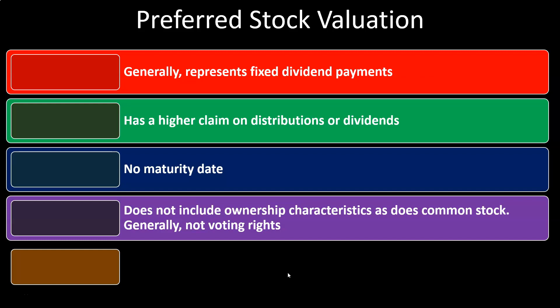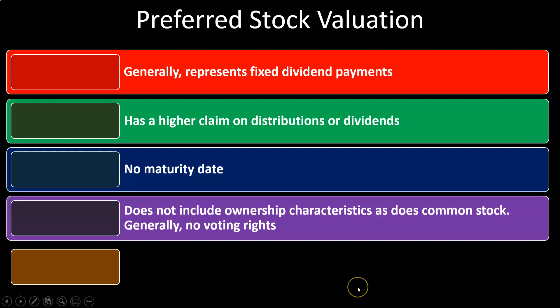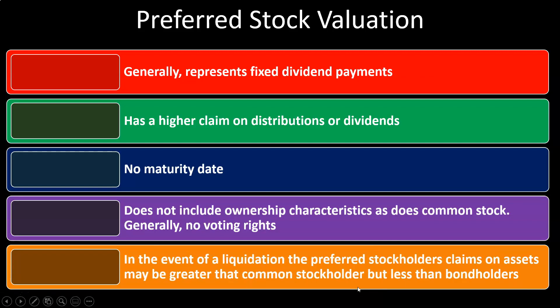Preferred stock does not include ownership characteristics like common stock — generally no voting rights. That's the downside: you get paid first, but only as much as is declared on the preferred stock. Anything over that typically goes to common stockholders, and you don't have the same voting rights. That's the general construction, though some details can vary depending on the circumstances.